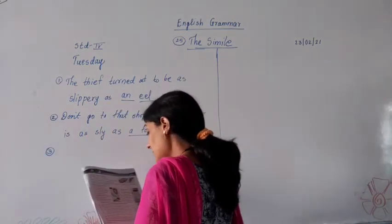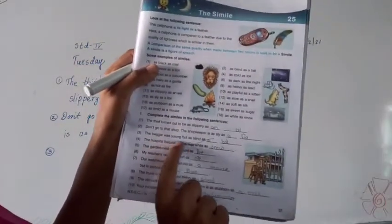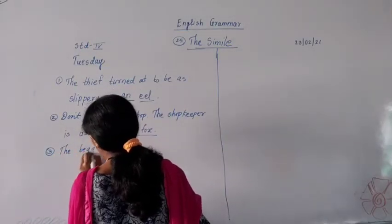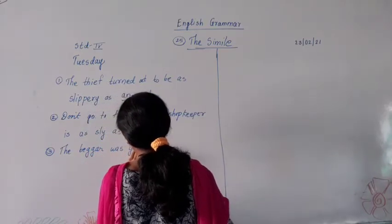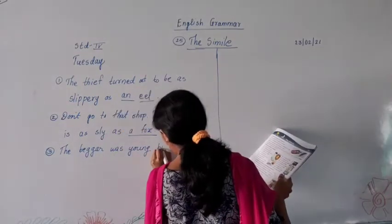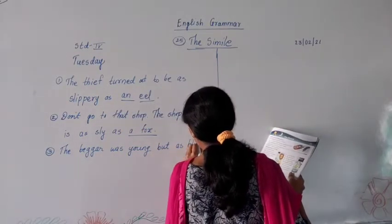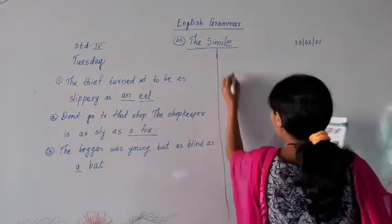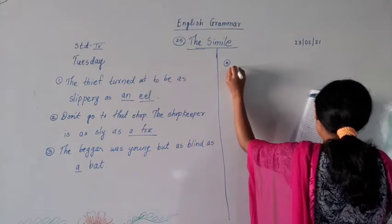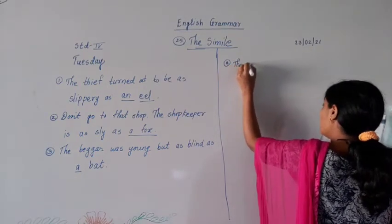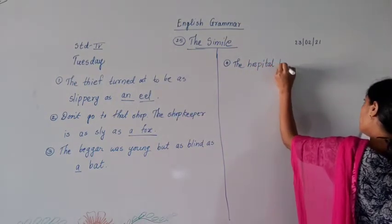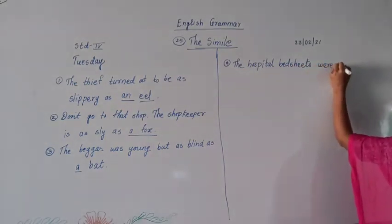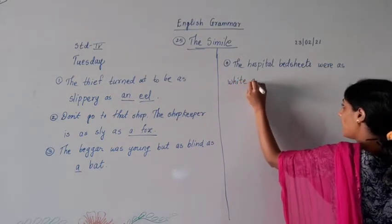Third one: the beggar was young but as blind as a bat. Fourth one: the hospital bedsheets were as white as snow.